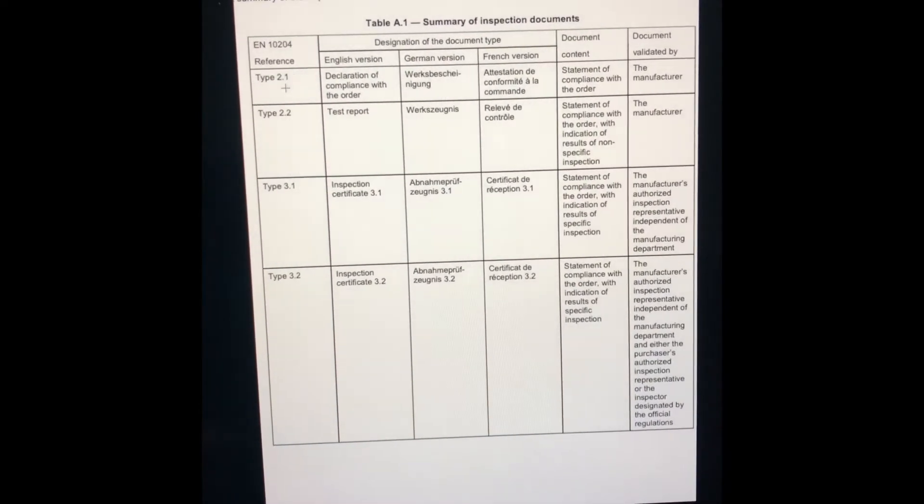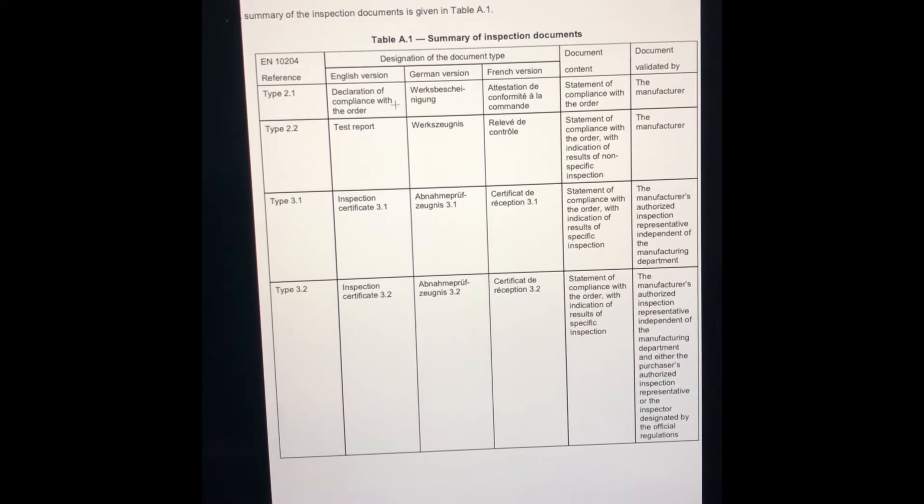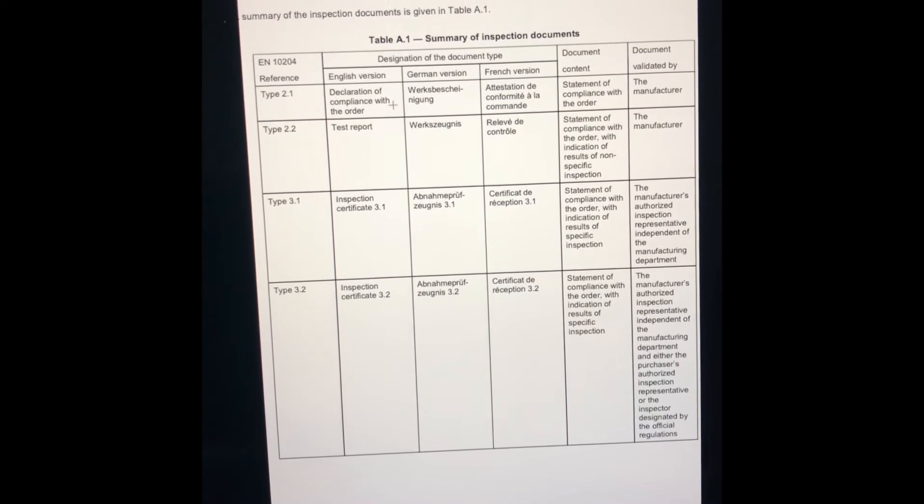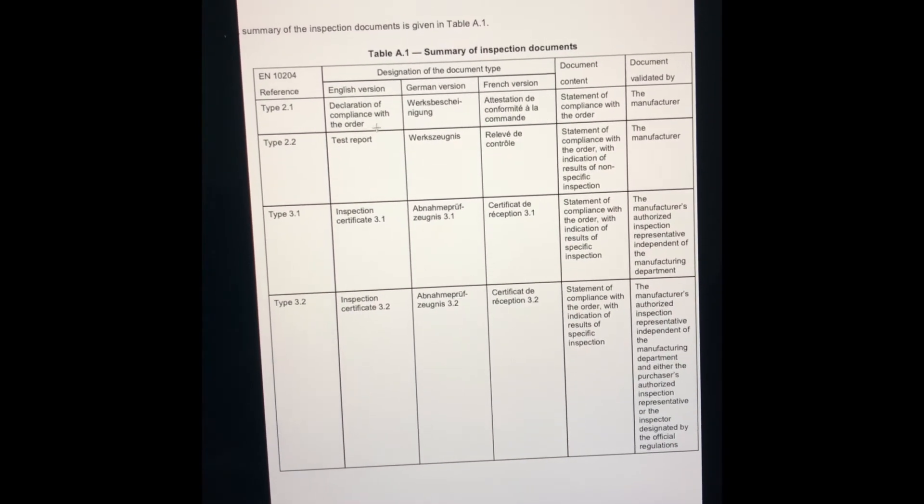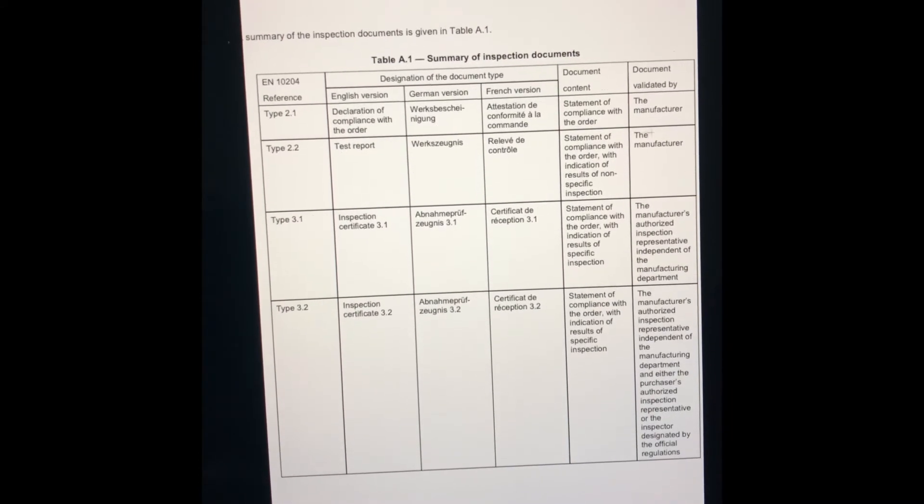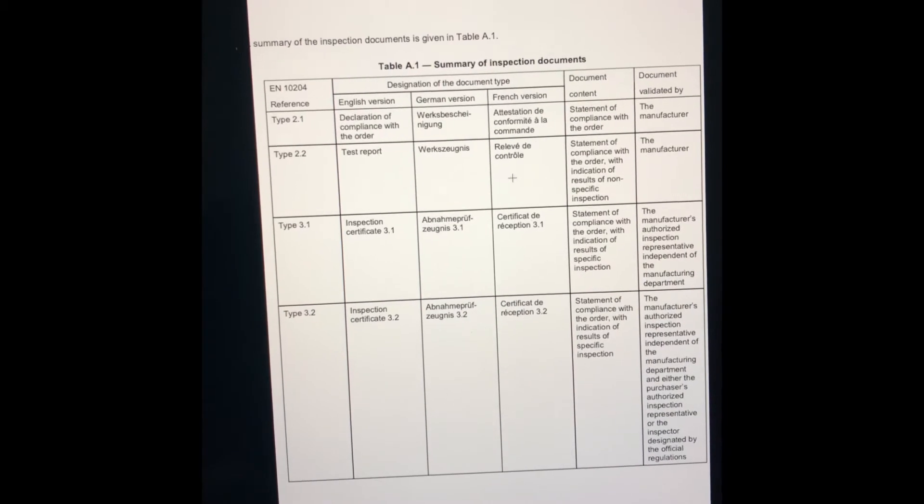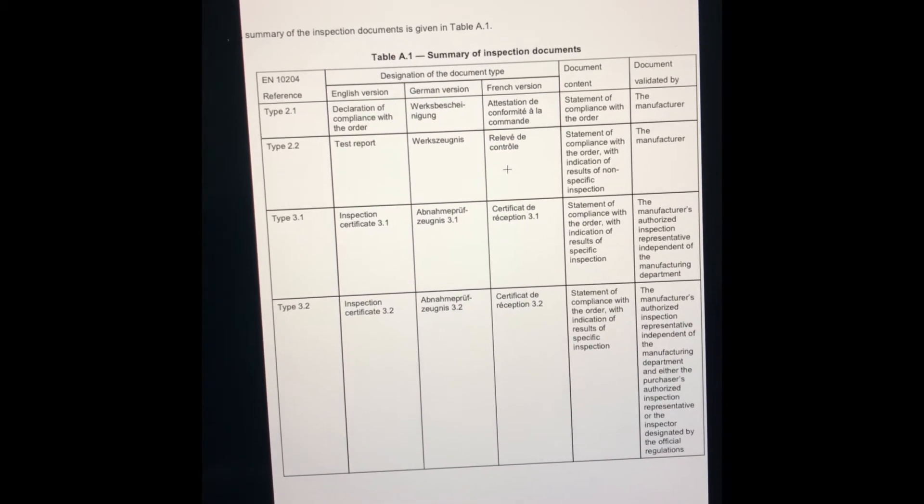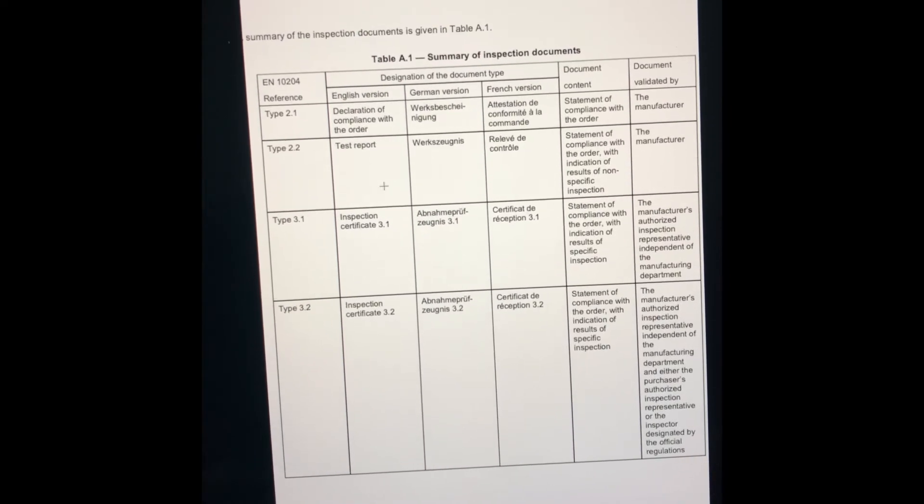First is Type 2.1. If you order any item like pipe or plate, you get only a declaration of compliance with the order by the manufacturer. That is Type 2.1 - simply a declaration that it complies with the requirements of the customer.